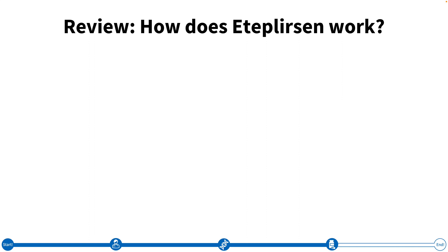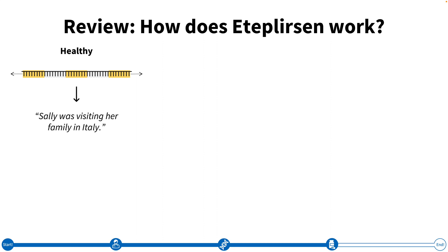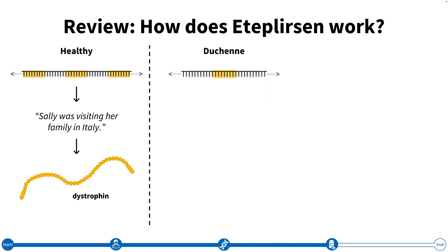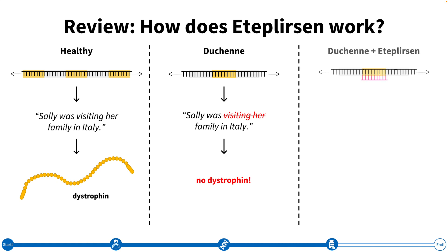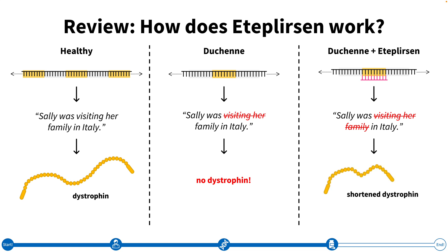Let's take a step back to review. Healthy individuals have exons 49 and 50 in the DMD gene, so the RNA transcript encodes a full sentence — 'Sally was visiting her family in Italy' — and the healthy full-length version of dystrophin is produced. In some individuals with Duchenne, exons 49 and 50 are deleted, the RNA transcript encodes a sentence that no longer makes sense — 'Sally was family in Italy' — and as a result, no dystrophin is produced. When these individuals with Duchenne are given atalurensin, an additional word is removed from the sentence and it makes sense again — 'Sally was in Italy.' While the dystrophin produced is shorter than in healthy individuals, it's better than having no dystrophin at all.